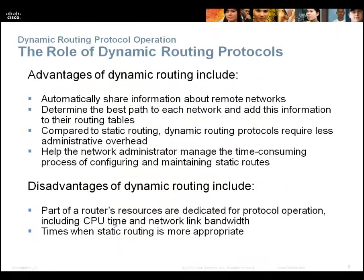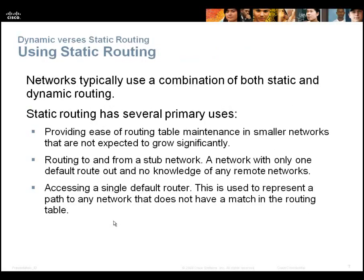Advantages of dynamic routing protocols: they automatically share information, automatically update themselves if a path goes down, and automatically add new networks. They help the network administrator save time because so much happens automatically, and we don't have to manage static routes. The disadvantage is they consume more CPU and bandwidth — sending hello messages and routing tables every 30 seconds takes up bandwidth, and recalculations consume CPU. For a very small network or one with only one router, there's no need for dynamic routing; a default static route handles everything. Static routing is still used in stub networks and isn't going away, it's just not used very often.